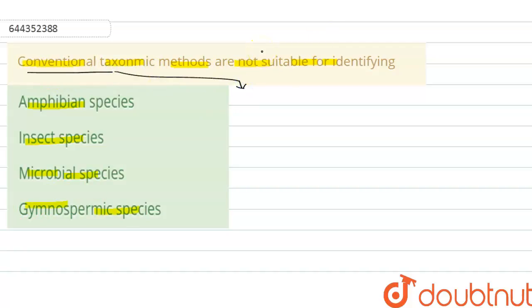Conventional taxonomic methods are based on the number of species and these are useful for plants, animals and fungi.